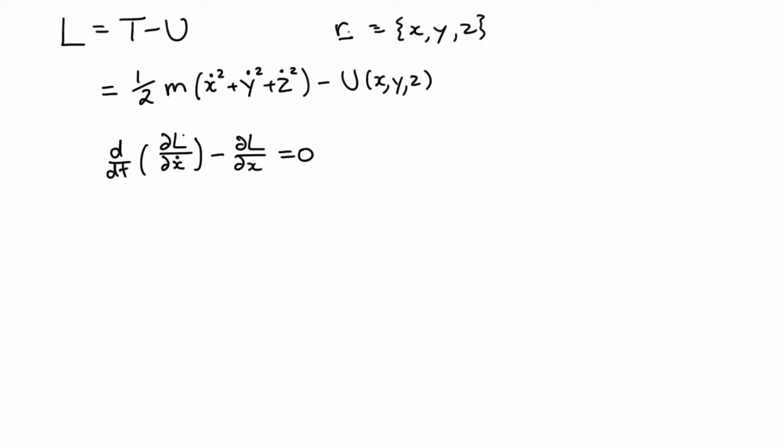And so we have to take the derivative of this with respect to x dot. That doesn't depend on x dot, neither does that or that. So it's just this term, which is going to give us a half m times derivative of x dot squared, which is 2x dot.